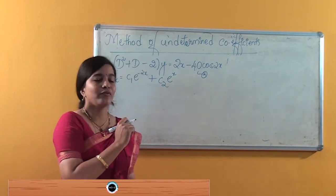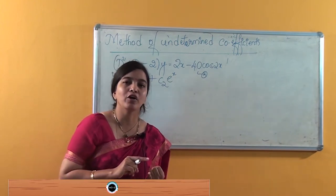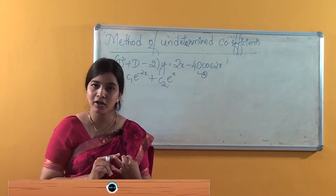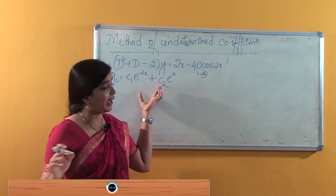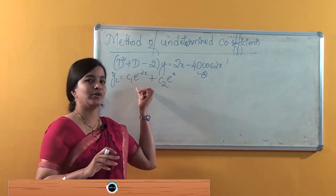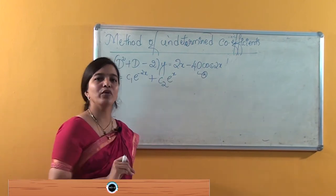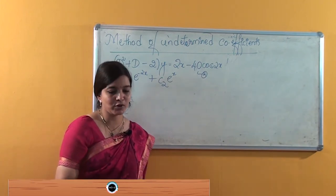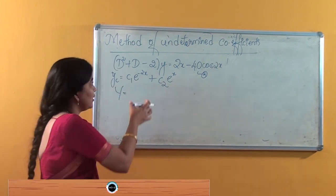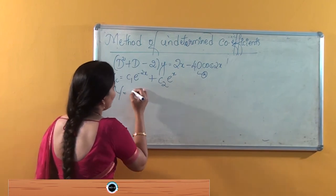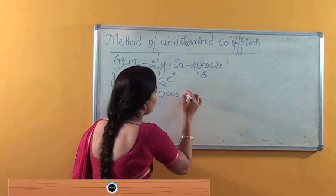Now, how to find the solution for this equation? We have to find the complementary solution and also the particular solution. The complementary solution has already been found: yc is equal to c1·e^(−2x) plus c2·e^x. Now we have to find the particular solution, and we will consider the right-hand side as 2x minus 40cos(2x).